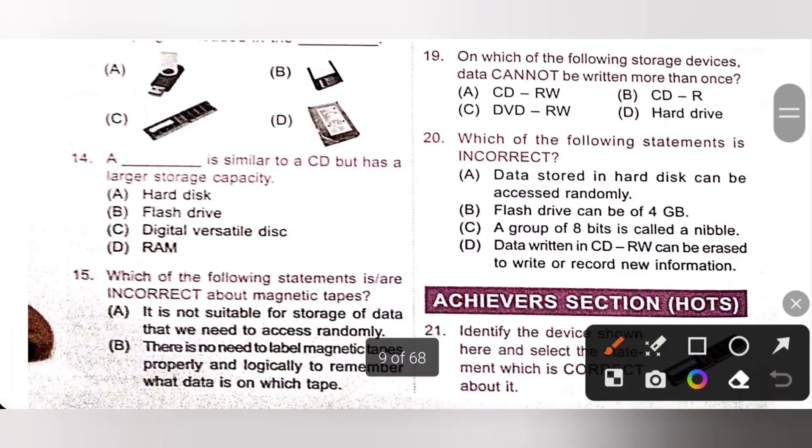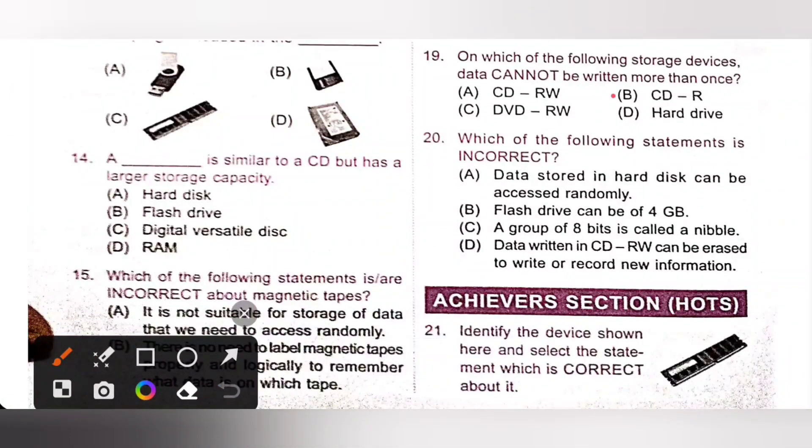19th. On which of the following storage devices, data cannot be written more than once. That is CD-R. CD-R means CD read. It is a compact disk that can be written once but read multiple times. Option B.